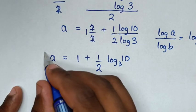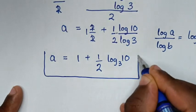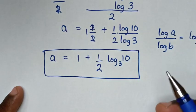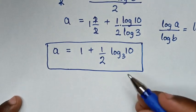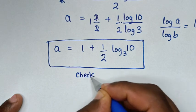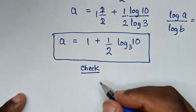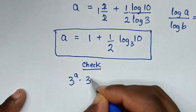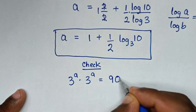So the final answer for the value of a is: a = 1 + ½·log₃(10). Now let's check this answer by substituting back into our original problem: 3^a times 3^a equals 90.